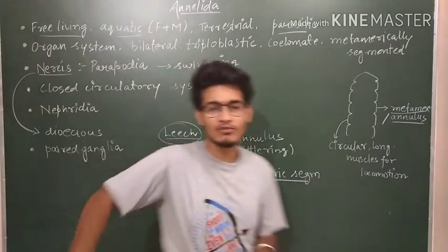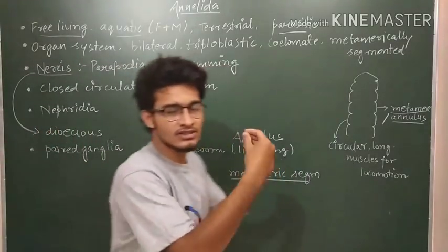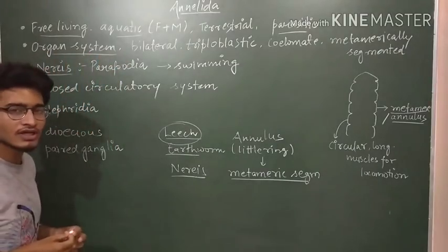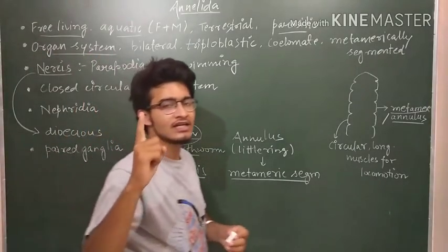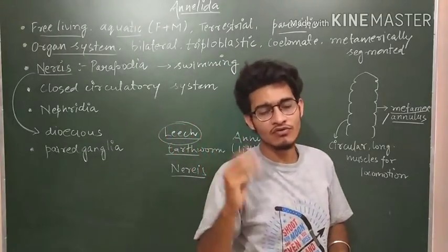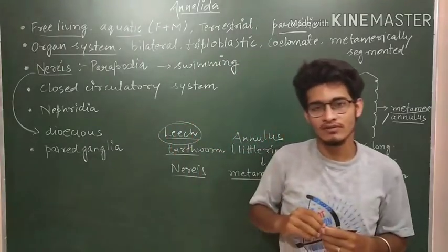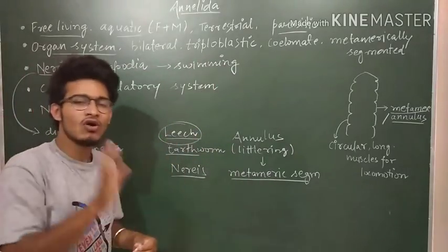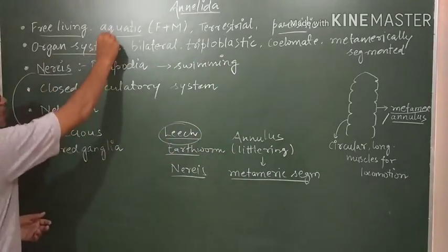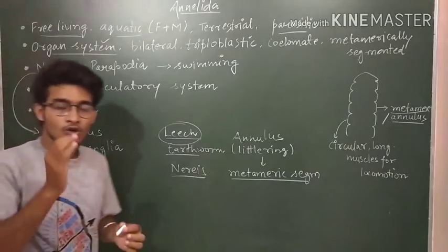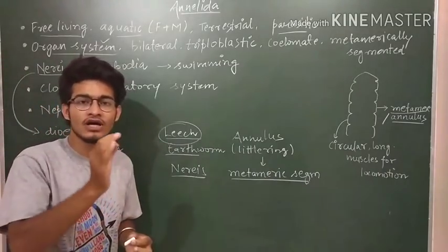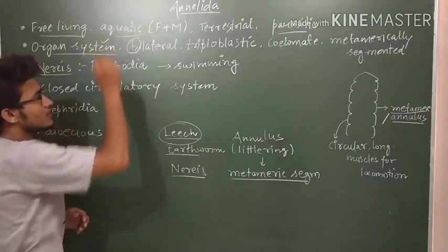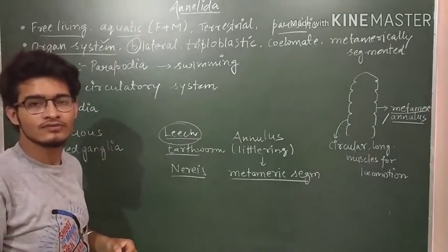The most simple point from this lecture which we are discussing from many different lectures: organ system level of organization. Now Porifera - cellular level. Coelenterata, Ctenophora - tissue level. Platyhelminthes - organ level. And after Platyhelminthes, all of the phyla must have an organ system. Only Coelenterata, Ctenophora and other echinoderms are having radial symmetry. All other are bilaterally symmetrical.